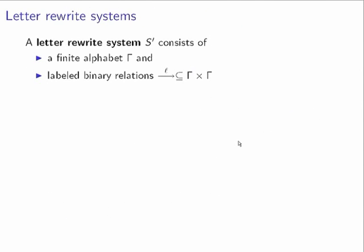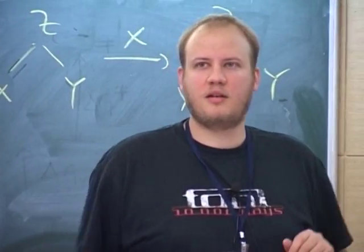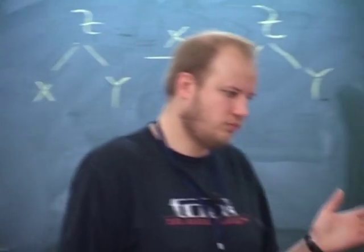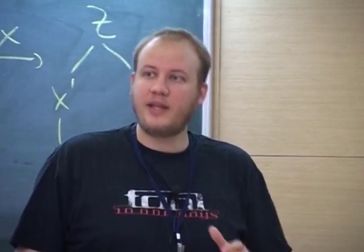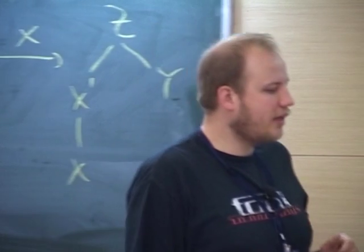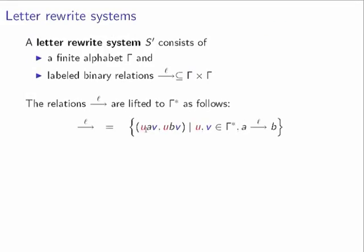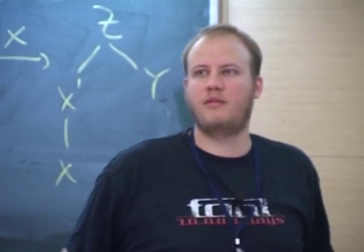What is a letter rewrite system? It's a very simple object: you have a finite alphabet and a binary relation on this finite alphabet. This induces an infinite transition system whose vertices consist of all words over this finite alphabet. When can you go from one word to another? You look at a word u·a·v — you have a prefix and a suffix — and you replace the letter a by a letter b, provided the rule a→b exists.